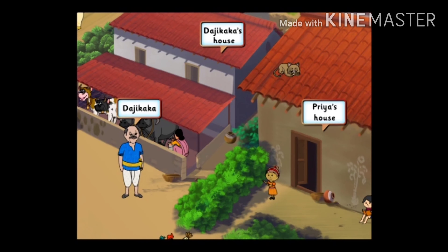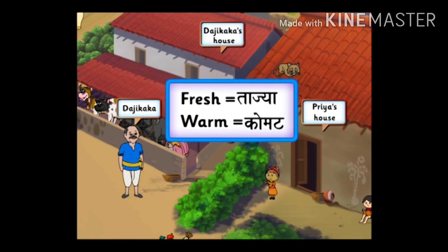Priya says the milk is fresh and warm. What does that mean? Fresh means Taja. And warm means Komat. You are right, Nikhil.